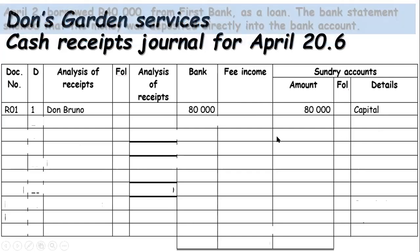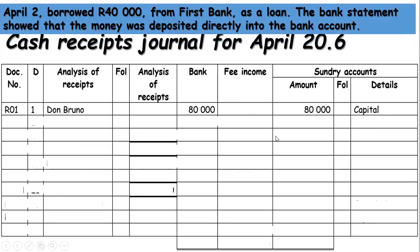The next transaction is on page 54, April 2nd: he borrowed 40,000 rand from First Bank. This is a liability — money borrowed. The source document comes from the balance sheet. The date is the 2nd, from First Bank, deposited directly into the bank. It goes under sundry accounts because it's not the core business of the company — this is a loan from First Bank.